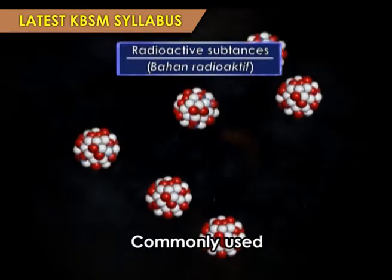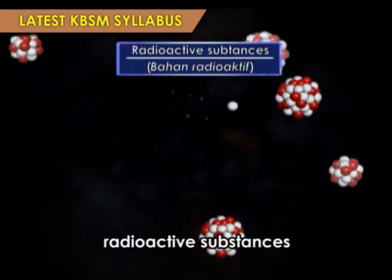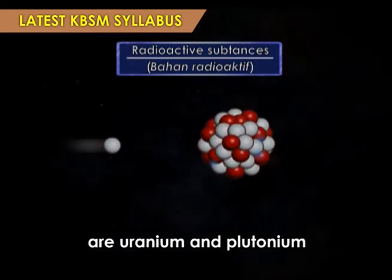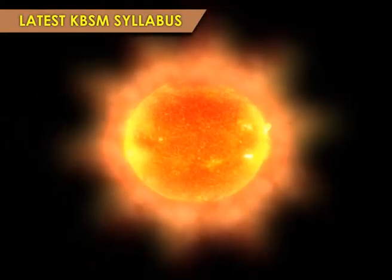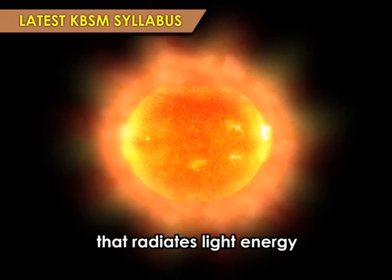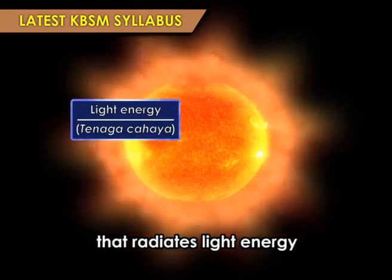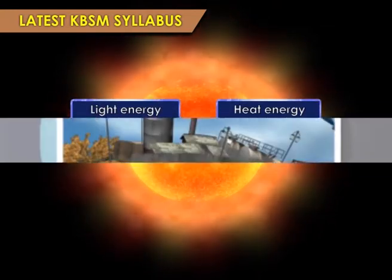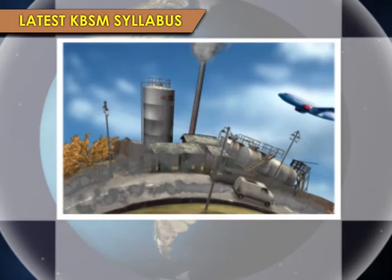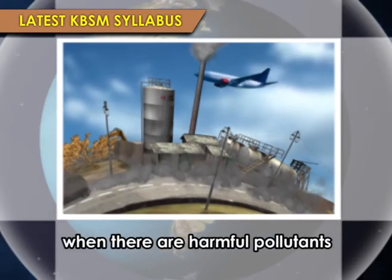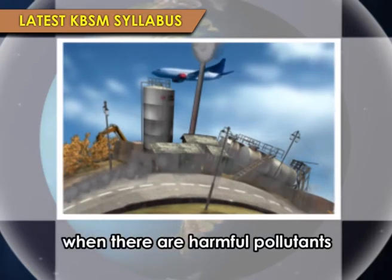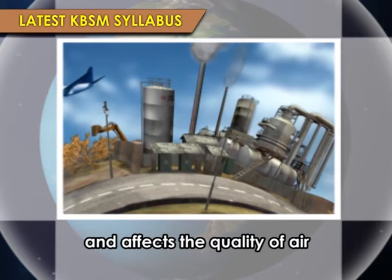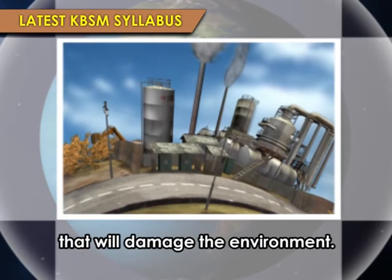Commonly used radioactive substances are uranium and plutonium. The sun provides solar energy that radiates light energy and heat energy. Air pollution occurs when there are harmful pollutants in the air and affects the quality of air that will damage the environment.